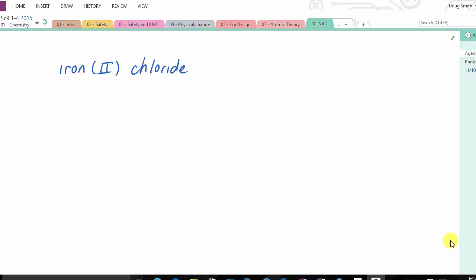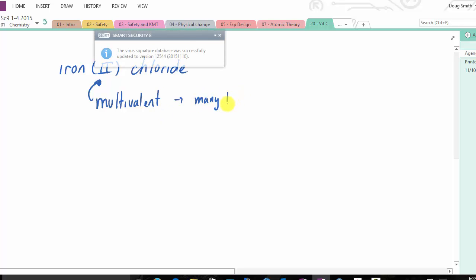So this is the first example I have: iron(II) chloride. This is an example of multivalent. So multivalent refers to that number right there. Multi means many. We could say that this has many kinds of valence shells, so it can have different ion charges. This number here, that's the Roman numeral, it tells you actually the ion charge of the iron.